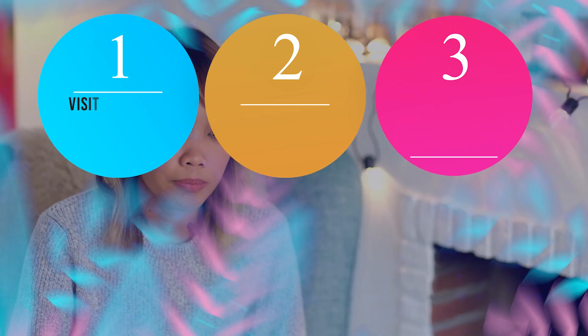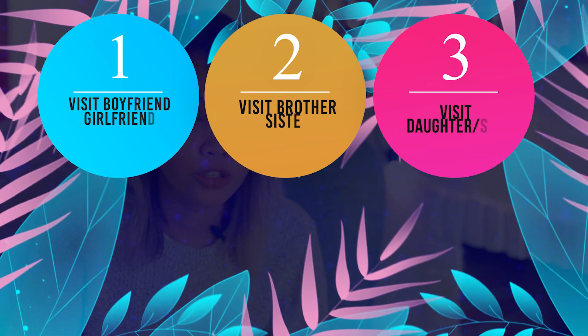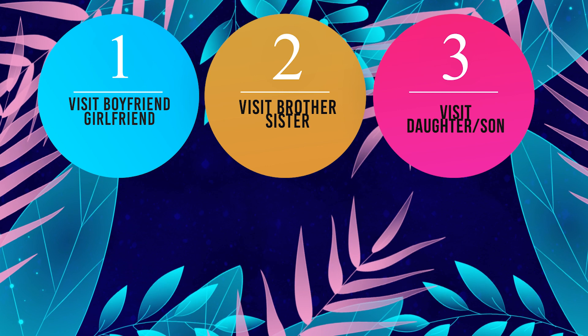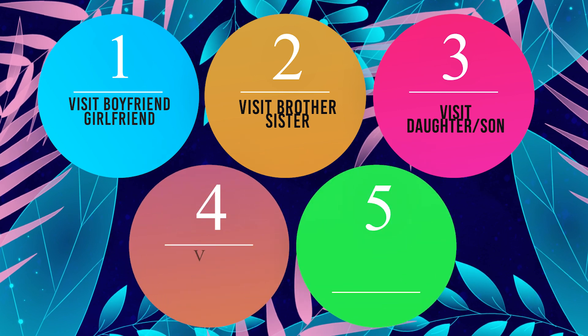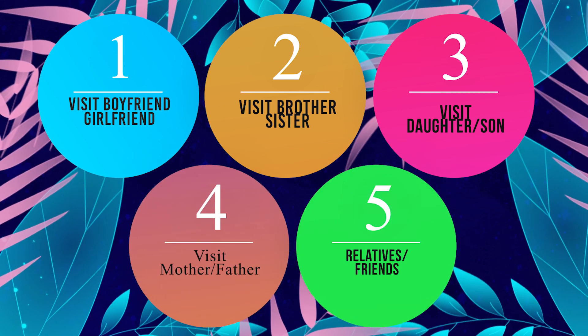The visit visa categories include: visit boyfriend or girlfriend, visit brother or sister, visit daughter or son, visit mother or father, and lastly, visit other relatives or friends. Based on who you are visiting, that is the category you will choose, because there are specific requirements under each option.